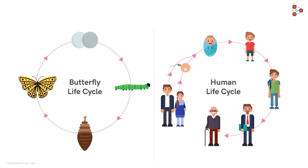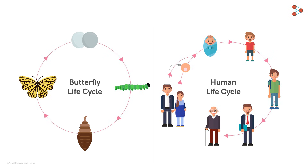Here we have the representations of the life cycle of two organisms. One picture depicts the life cycle of a butterfly, while the other shows the development stages of a human. Have you ever wondered how this little caterpillar turns into a butterfly, or how such a small baby turns into an adult?